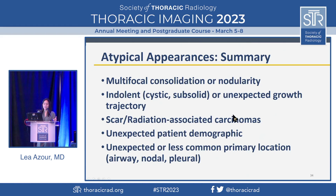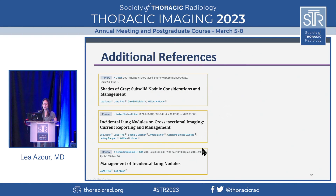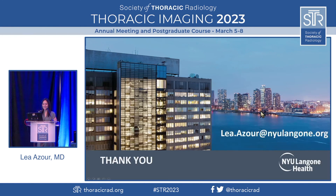Summary of atypical appearances: multifocal consolidations or nodularity, indolent or unexpected growth trajectories, scar or radiation-induced carcinomas, unexpected patient demographics, and unexpected or less common locations. These are some references — some of the cases are from our publications. This was a pleasure. Thank you all so much.